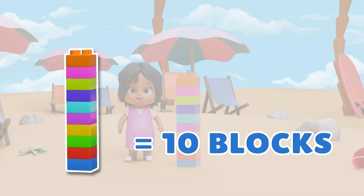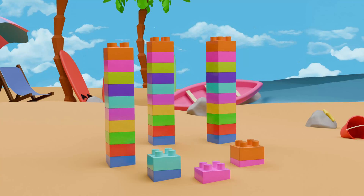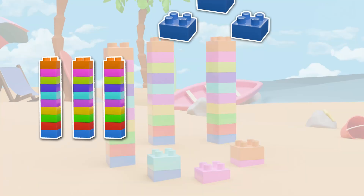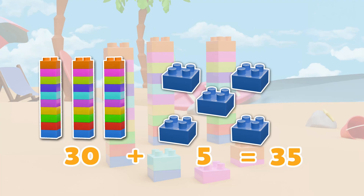Come, let's count more blocks, but this time using grouping. First, let's count the groups. One, two, three. There are three groups. And now, let's count the individual blocks. One, two, three, four, five. There are five blocks. So, we can say there are three block sticks and five single blocks. That means three times ten, that is thirty, is added with five, which is thirty-five. So, in total, there are thirty-five blocks.